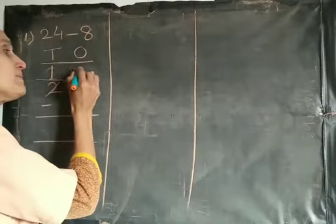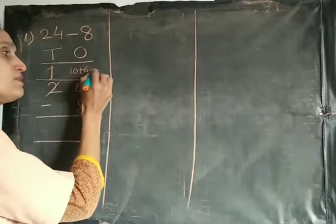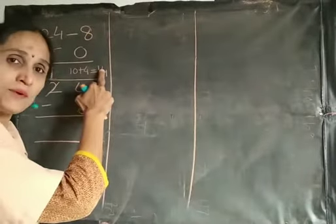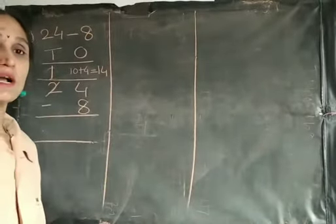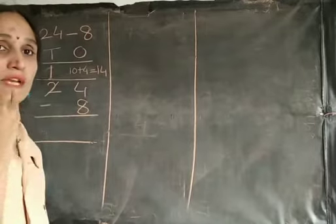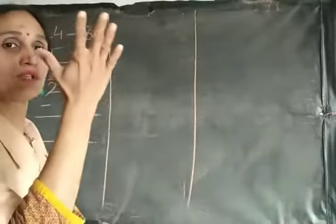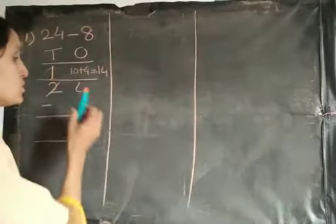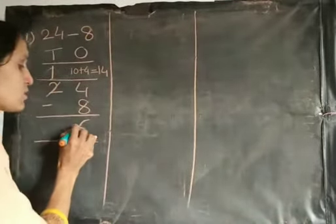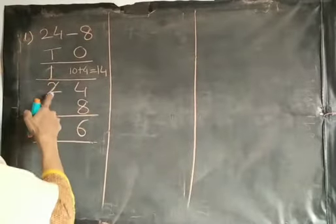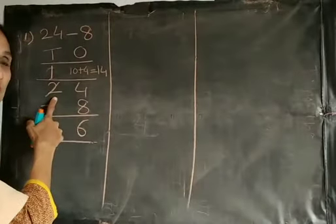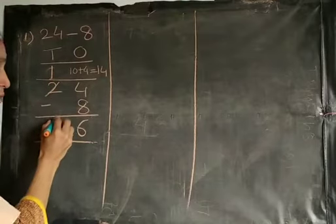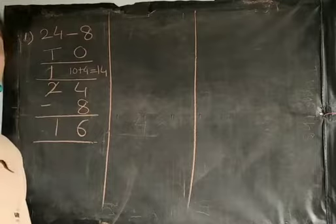So here 10 plus 4. 10 plus 4 is 14. Now we need to subtract 8 from 14. Count from 8 to 14: 9, 10, 11, 12, 13, and 14 — that means 6. So we write 6 in the 1s column. Now we subtract the digits from the 10s column. Here is 1, and 1 minus 1 is 0. So the answer is 16.